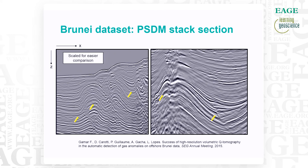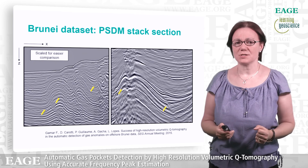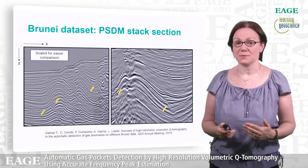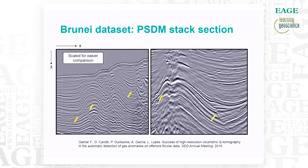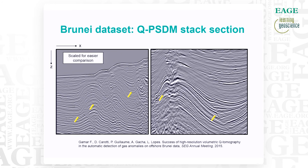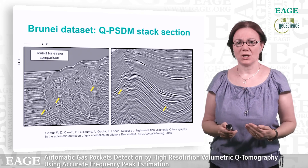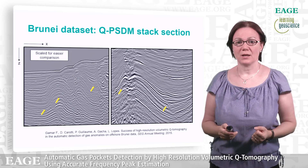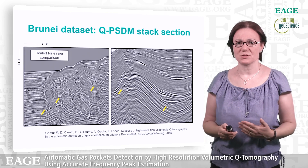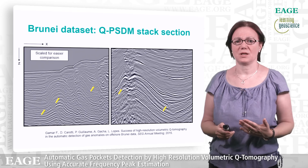For easier comparison, we scaled the amplitude to focus just on the change in resolution. Here is the Brunei dataset PSDM stack section, and here is the Q-PSDM section. Using Q-PSDM, we get better fault definition as highlighted by the yellow arrows, and generally we improve the resolution of the reflected events.